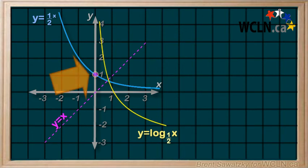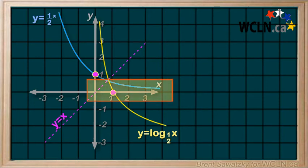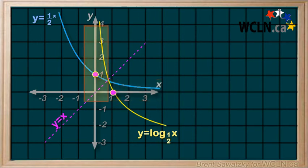Our y-intercept from the exponential function, 0 comma 1, becomes an x-intercept in the inverse log function, 1 comma 0. Again, the x and y's just get flipped. The asymptote from the exponential function, that is y equals 0, again becomes an asymptote for the inverse log function as x equals 0.